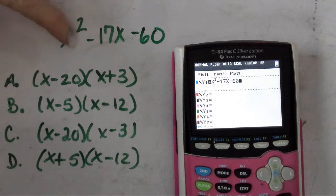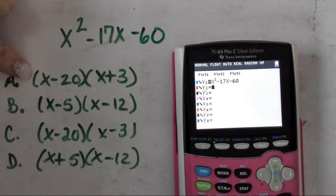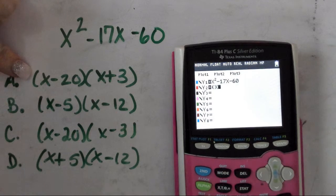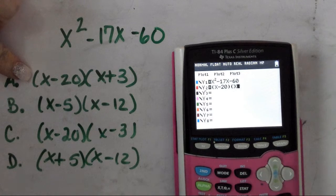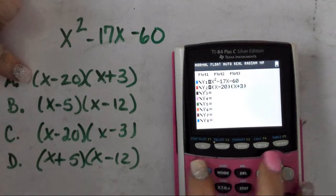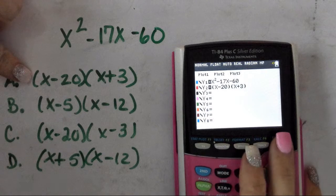Okay, so we want to know which of these matches it. We go down to the one below it and put in parentheses x minus 20, parentheses x plus 3. You're going to go to second and table, and we're going to see if they match.